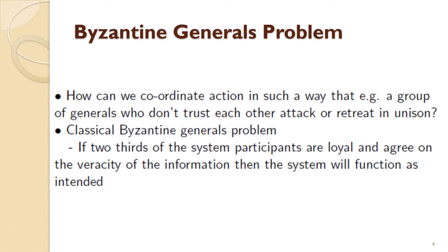One of the core themes underpinning the construction of blockchain is the need to create and establish trust in a trustless environment. This has been given a classical name: the Byzantine Generals Problem. The idea is to coordinate action such that people will behave in a coordinated manner even if they don't trust each other. Historically, the question was: how can you get a group of generals who don't trust each other to attack or retreat in unison?